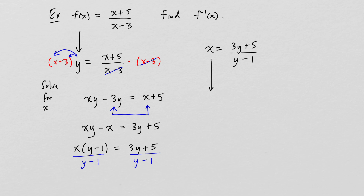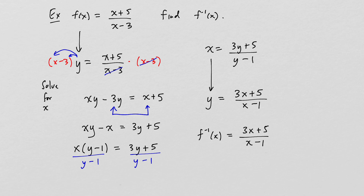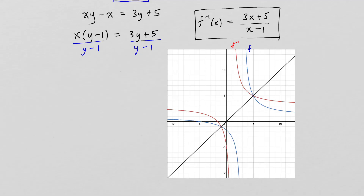Then interchange x and y to get the inverse function: f inverse of x equals 3x plus 5 divided by x minus 1. Graphing both functions, you can see the blue graph of f and the red graph of f inverse are mirror images across the line y equals x, visually confirming these are inverse functions.